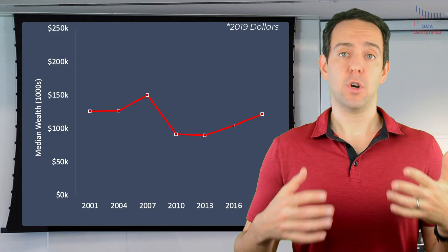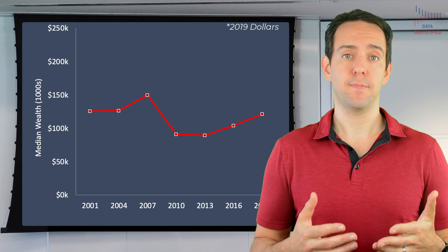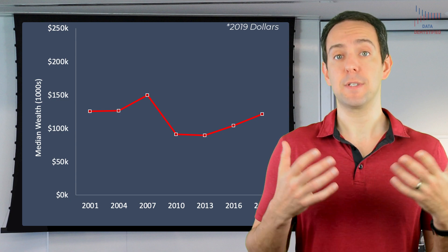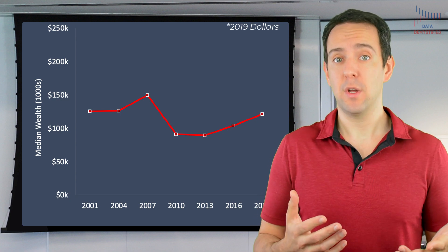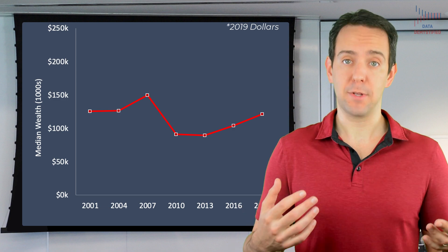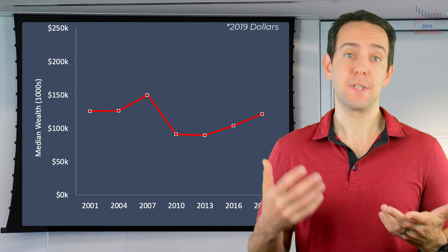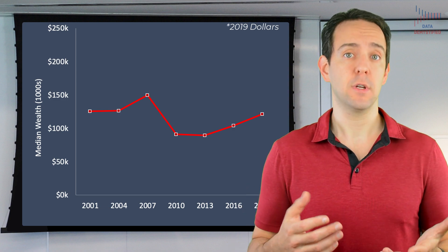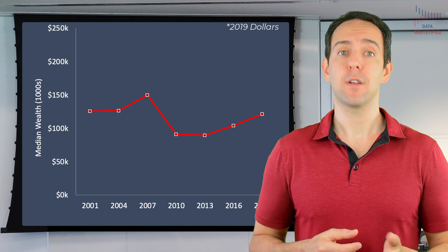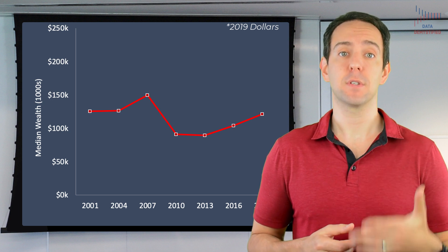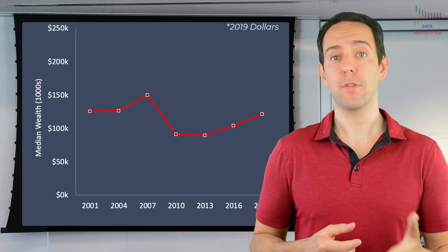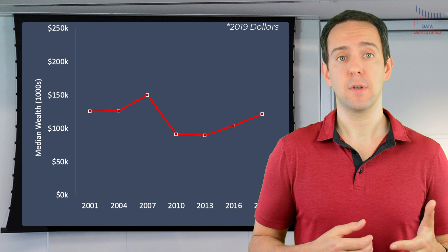Returning to this chart, we need to ask ourselves a simple question: is this picture of wealth over time the same for everyone, or is there something being hidden by aggregating across all people, which is what is happening in this chart? The answer, perhaps not surprising to many of you, is that there are massive differences in wealth if we split this out by wealth for white versus Black Americans.